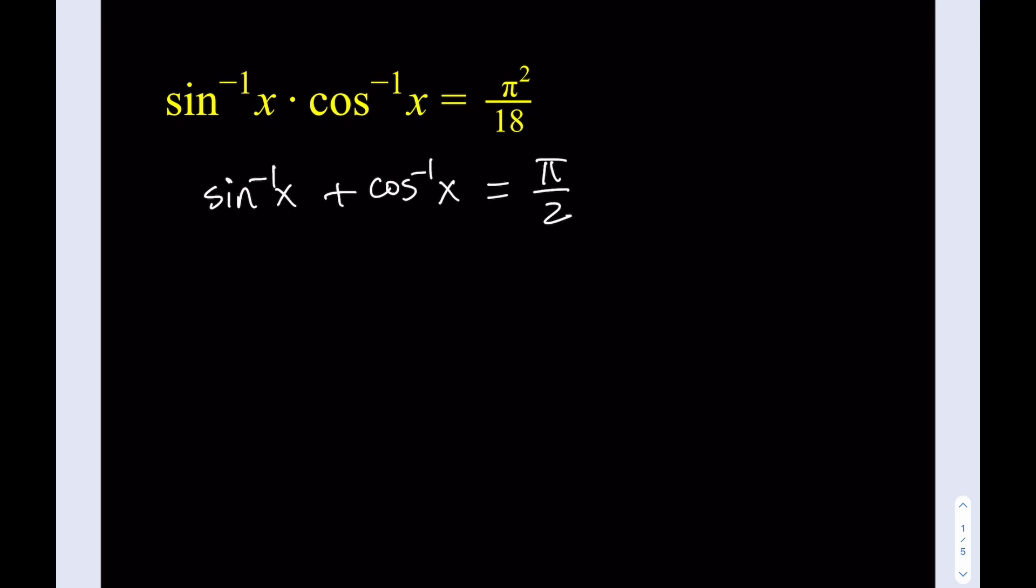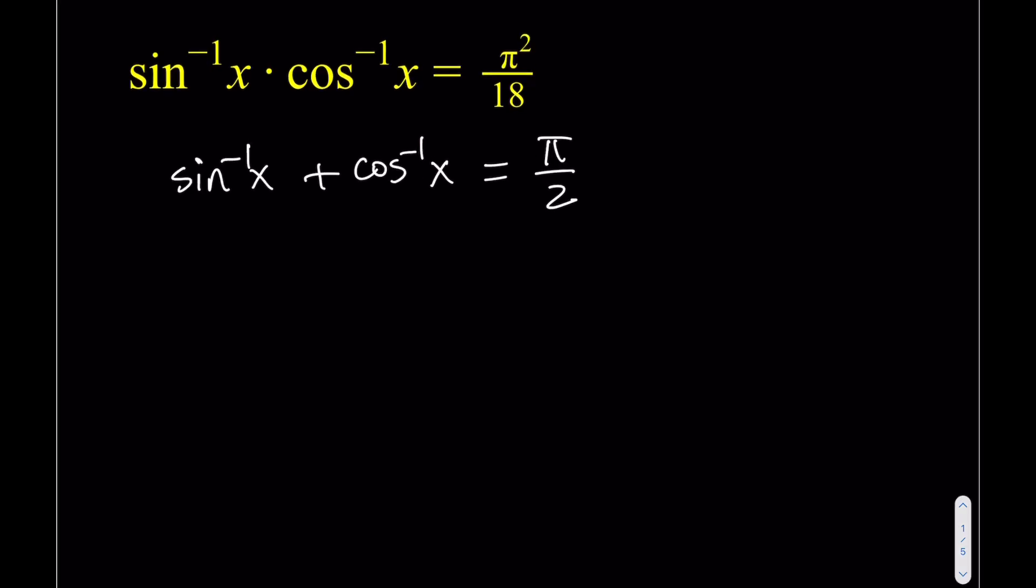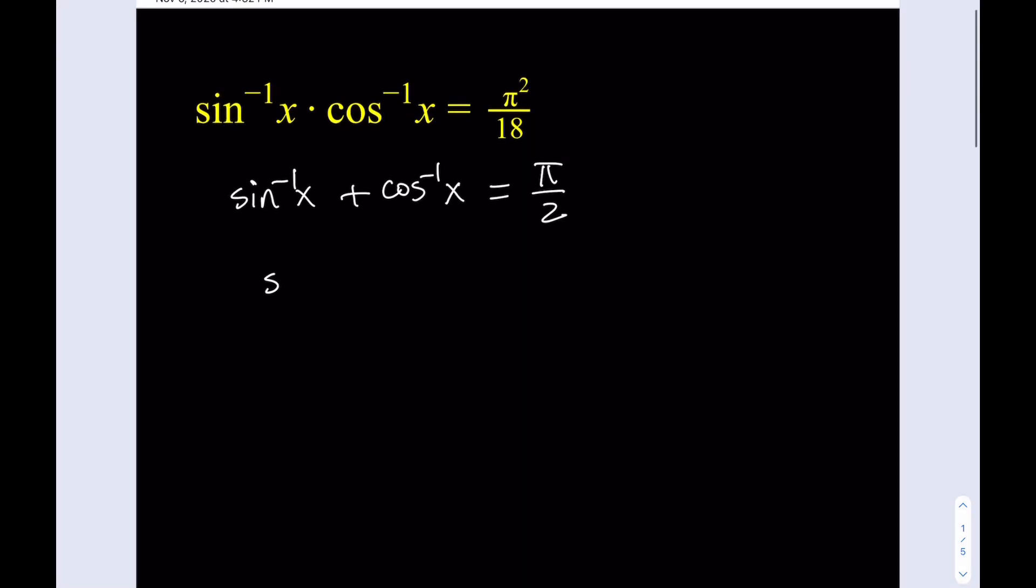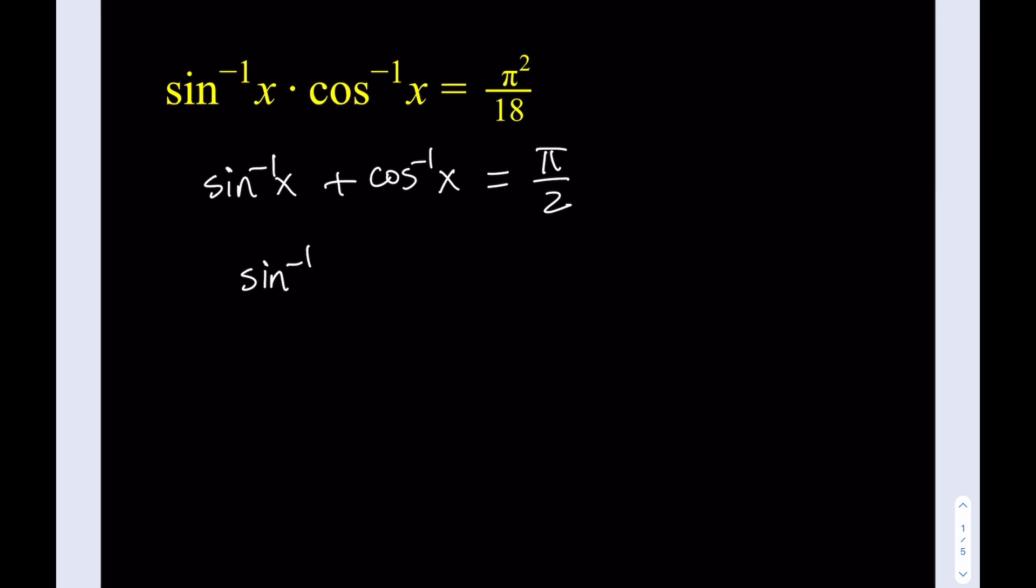Sine inverse of x plus cosine inverse of x is equal to pi over 2. Why? Because if you think about two complementary angles, the angle whose sine is x and the angle whose cosine is x, they're going to be complementary angles. You can draw a right triangle and see that this is true. Now, this allows me to replace sine inverse with something else. I am going to isolate sine inverse of x and write it as pi over 2 minus cosine inverse of x.